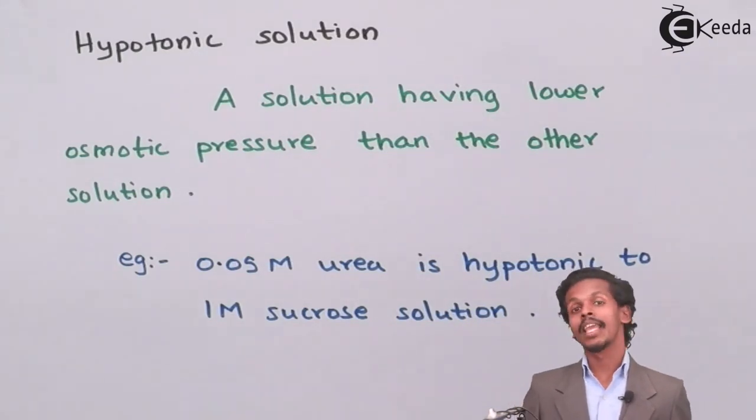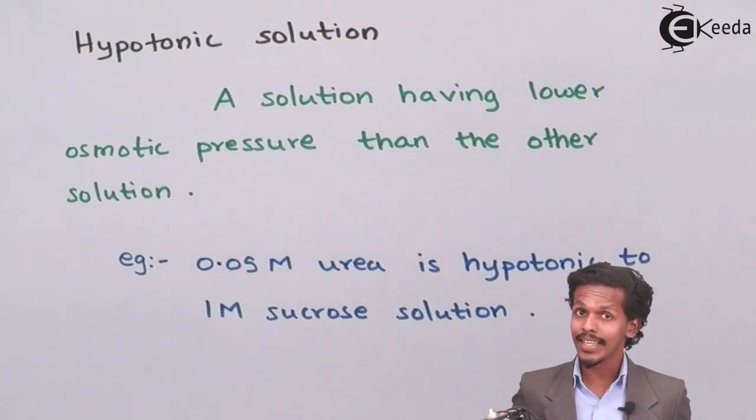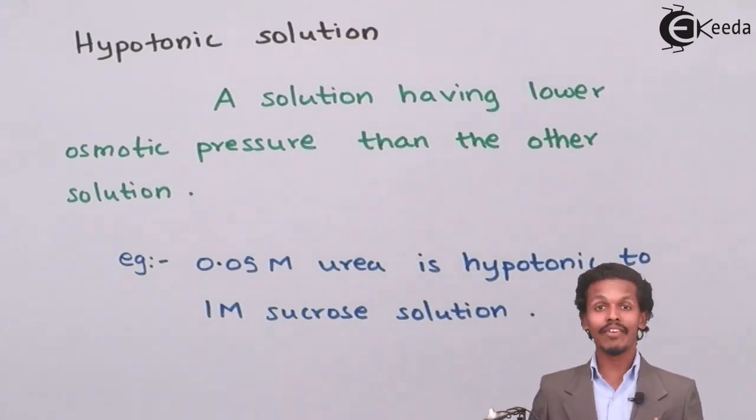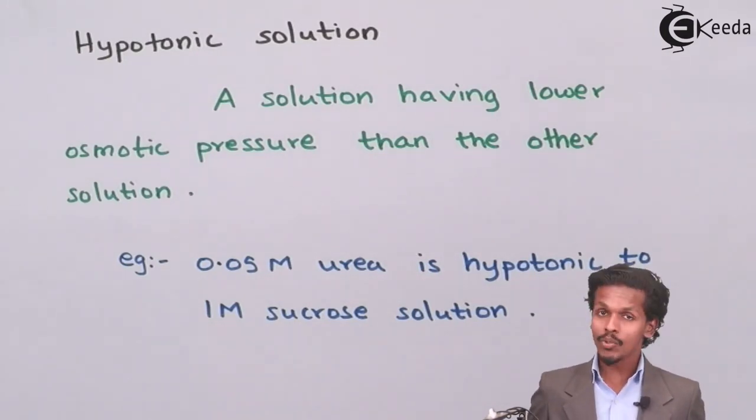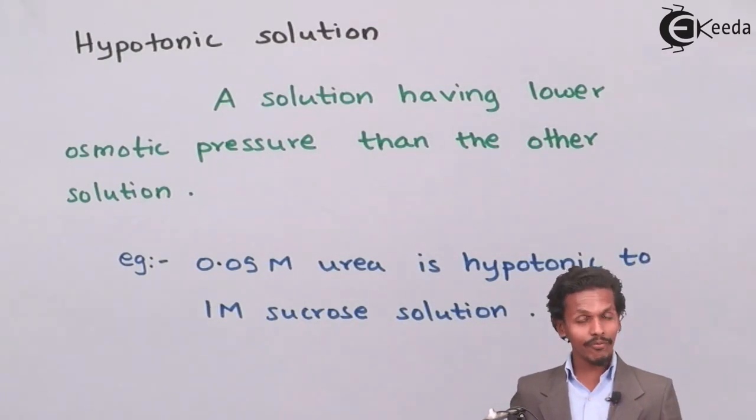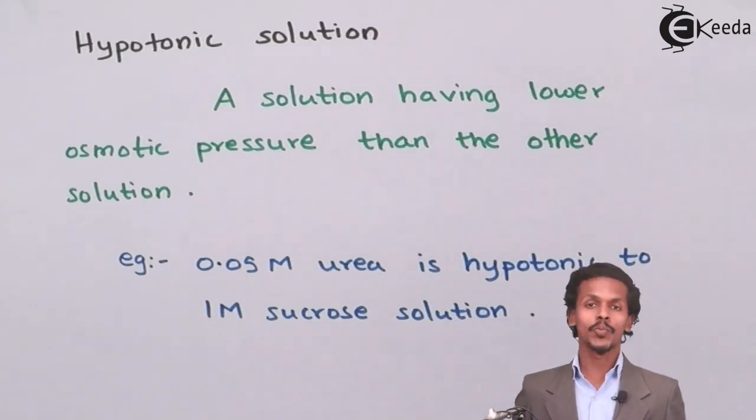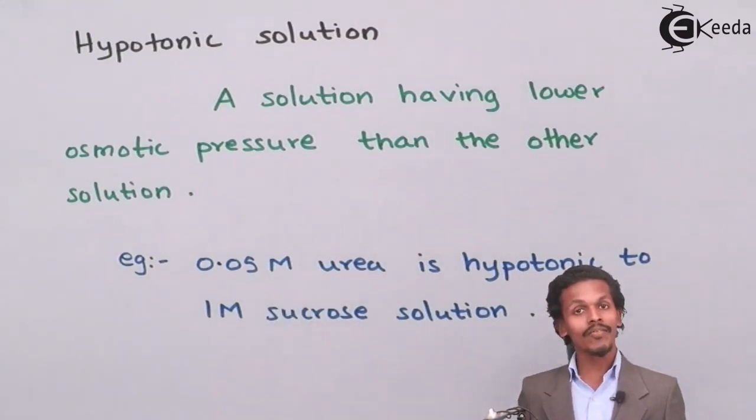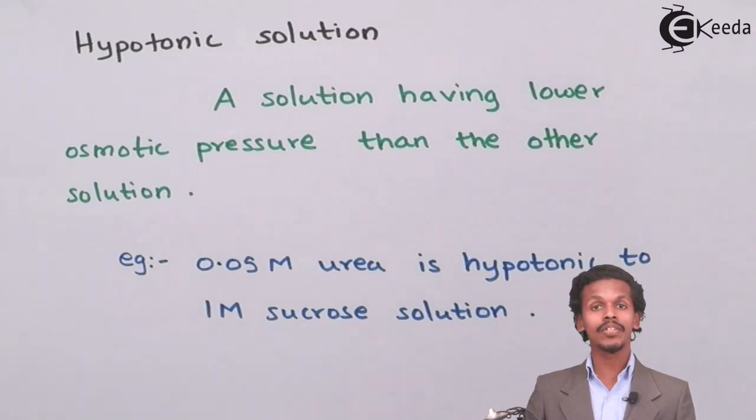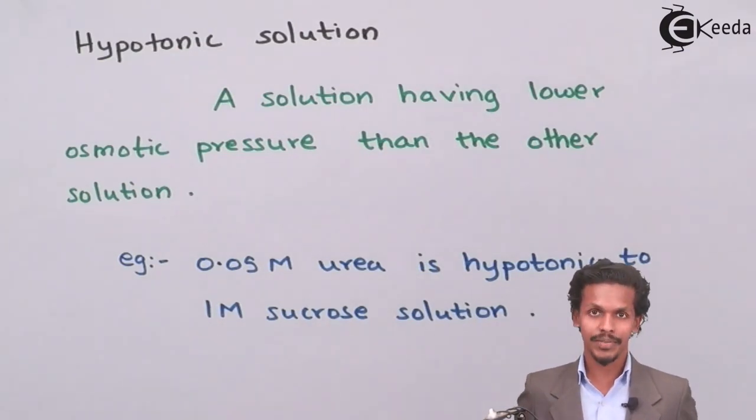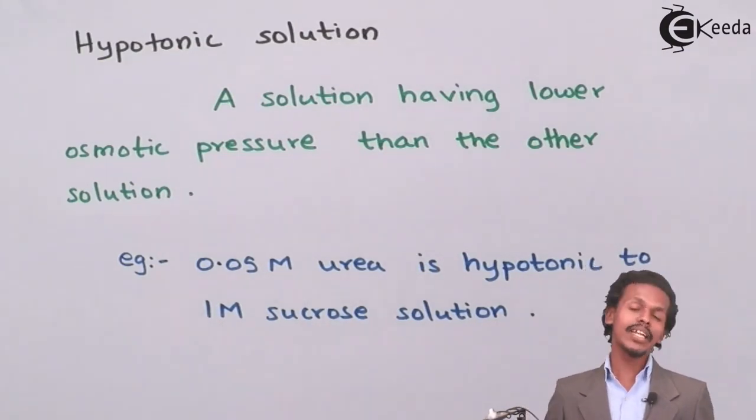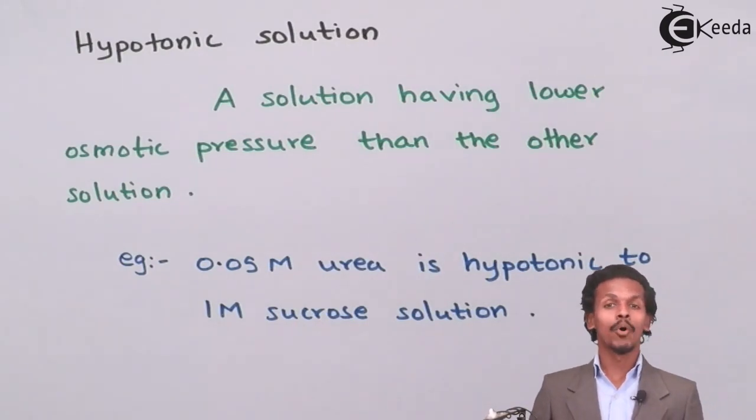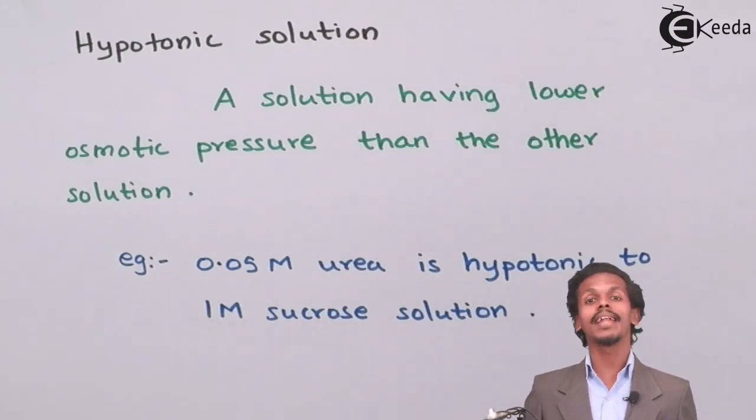If the concentration is less, then the osmotic pressure is also less, and if concentration is more, then the osmotic pressure that we have to apply will also be more. Therefore, the solution where we have to apply less osmotic pressure, or which has less osmotic pressure, is hypotonic to the one in which we have to apply more osmotic pressure.